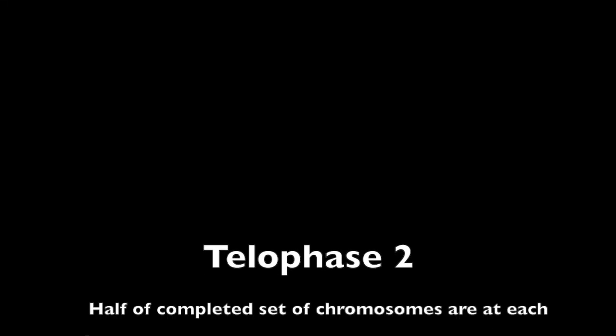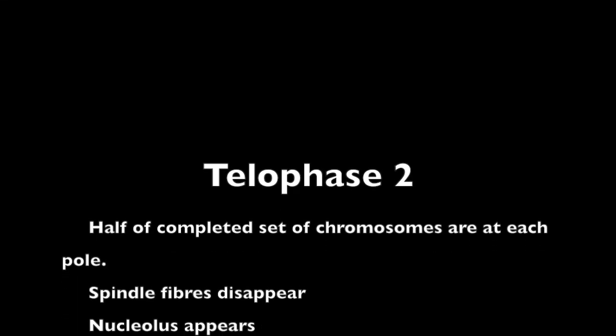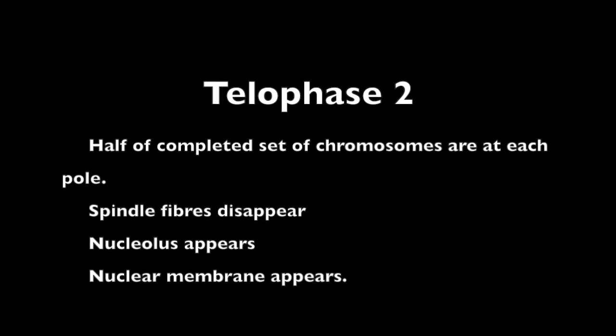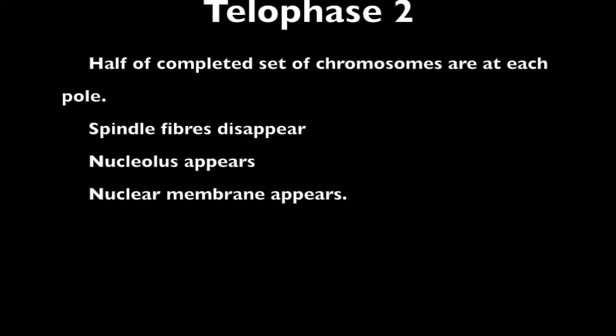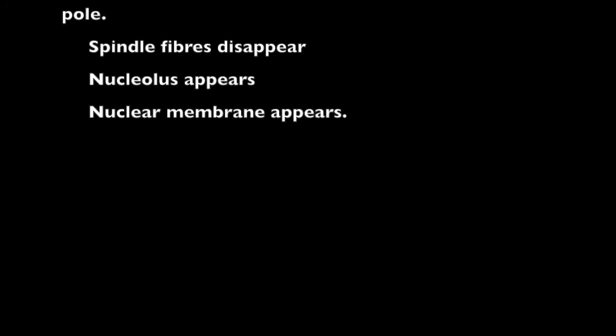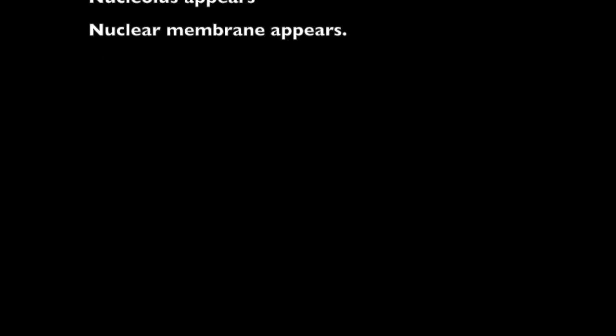In telophase II, half of a completed set of chromosomes is now at each pole of the cell. The spindle fibers disappear. The nucleolus appears within each nucleus and the nuclear membrane forms.